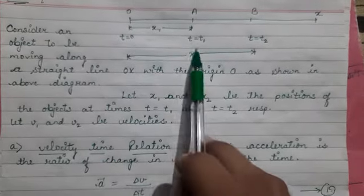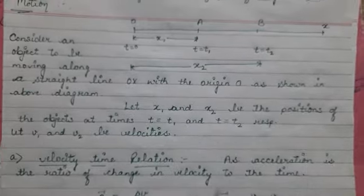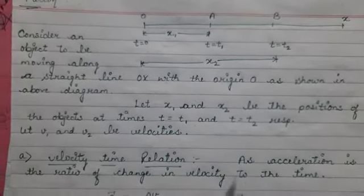At times T is equal to T1 and T is equal to T2 respectively and we know that V1 and V2 are the velocities.